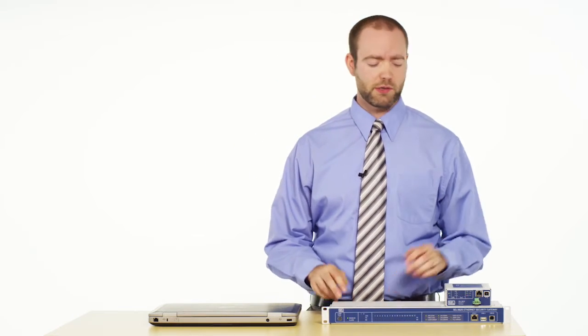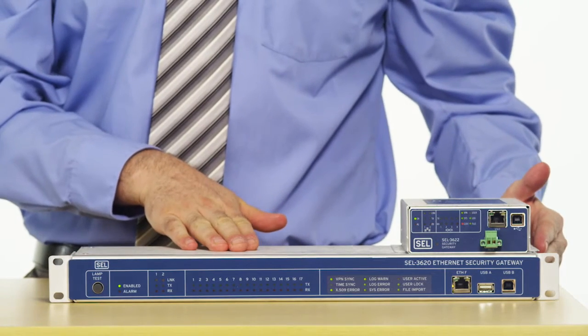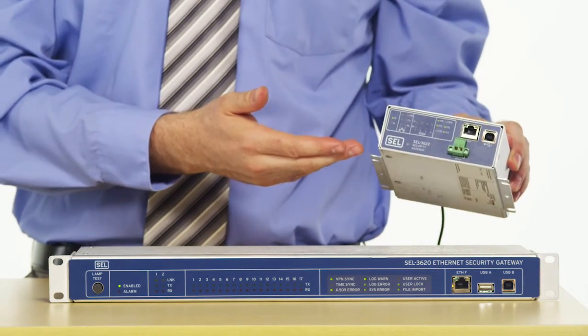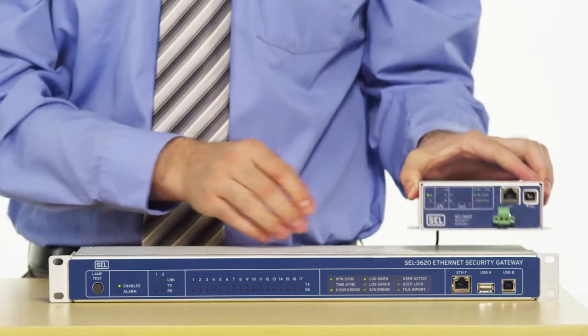Now the Security Gateway product line features both the 3620, which is a 19-inch 1U rack mount device, as well as its little brother, the SEL3622 Security Gateway, which is a DIN rail mount device.